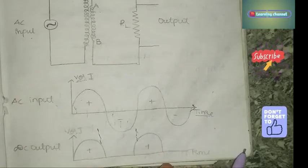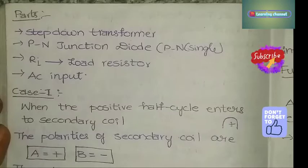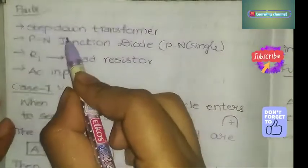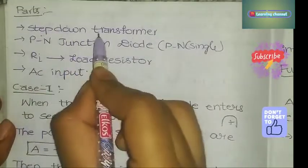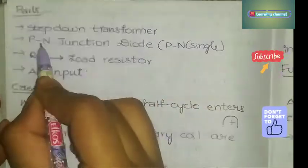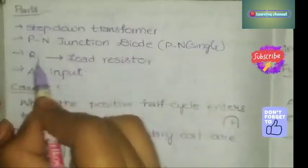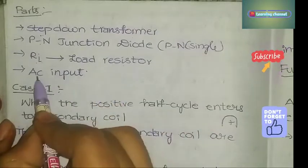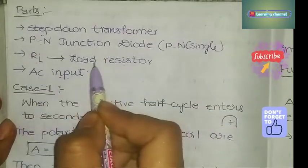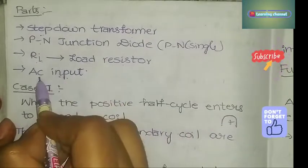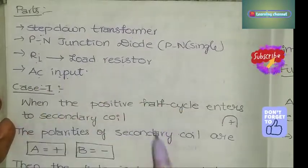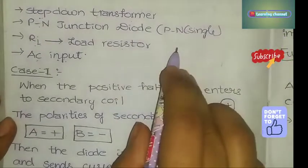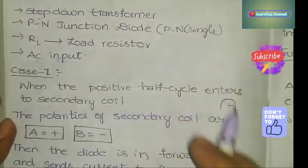The parts of the half-wave rectifier are: a step-down transformer, a PN junction diode, a load resistor RL, and the AC input. The AC input is converted into DC through these components.